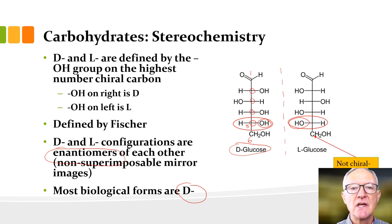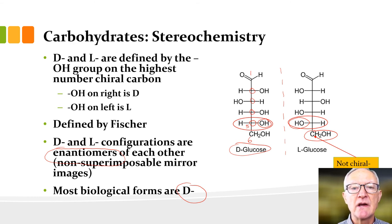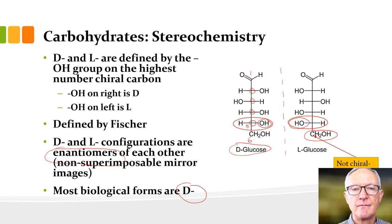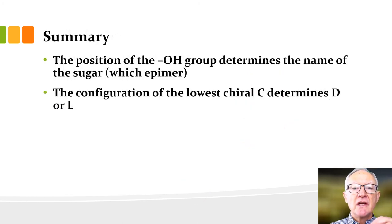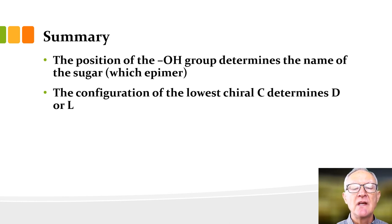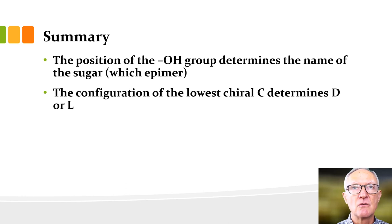Note that carbon six is not a chiral carbon — there are two hydrogens on carbon six, so two of the groups are the same and therefore it's not chiral. To summarize: the position of the OH groups determines the name of the aldohexose — whether it's glucose, galactose, or another sugar — and each has different properties. Once we have the name, D and L shows us the stereochemistry of that particular molecule: D if the OH is on the right in the Fisher projection of the highest chiral carbon, and L if it's on the left.